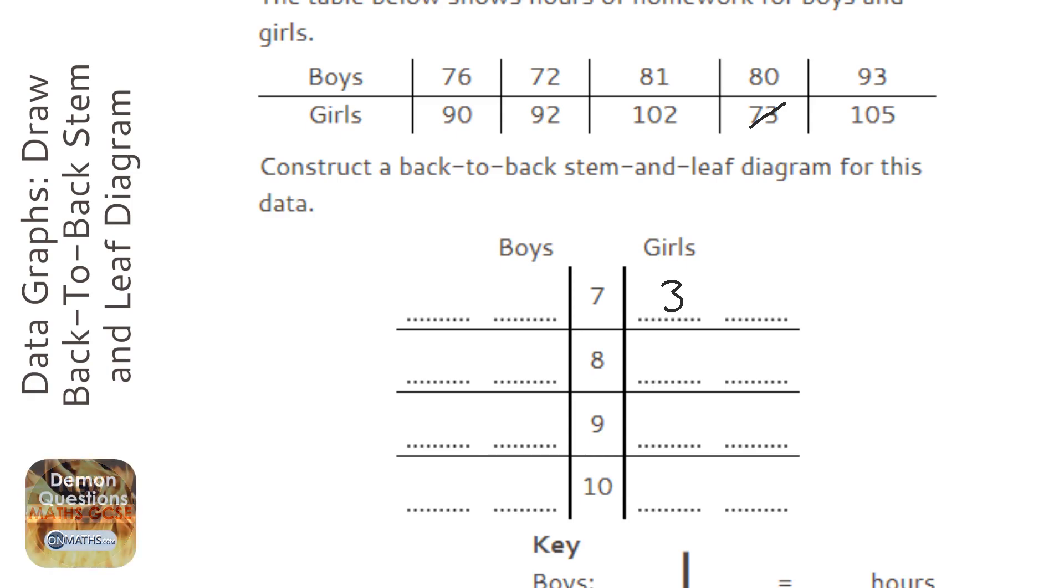Next I think it's 90, so I'm going to put a 0 in the 90 column. Next is a 2, so I put 2 in the 90 column. Notice that the smaller numbers are closer to the middle, so 0 goes close to the middle and 2 goes on the outside. 102 - that's 10 tens and 2 units. And then 105.